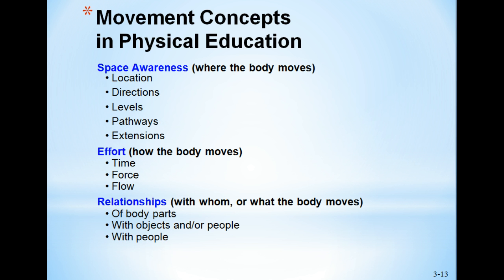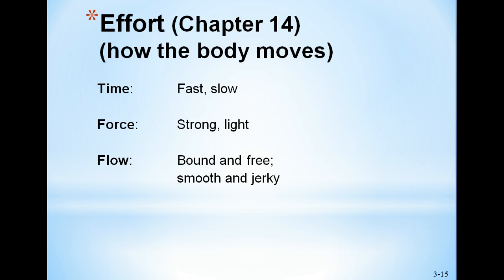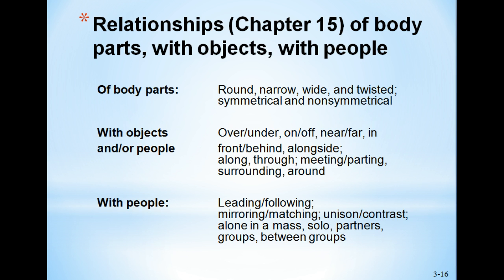The movement concepts in physical education are: space awareness — where the body moves; effort — how the body moves (fast, slow, strong, light); and relationships — with whom or what the body moves (body parts, with objects, with people, and so on). Chapter 14 is about effort, and chapter 15 is about relationships. These are the cognitive concepts or content to be taught to students — you are teaching them how to move. Our first set of lessons will be about self-space and general space, and safety, which is the highest priority during your lessons.